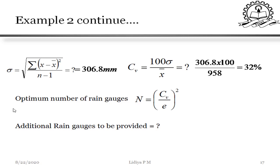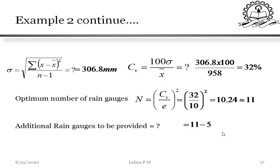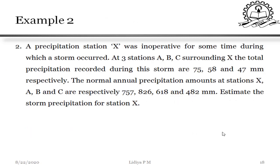For the optimum number of rain gauges, substitute the values into the equation where E is the percentage error = 10 percent. You get 10.24, which rounds up to 11. Since there are already 5 existing rain gauge stations, the additional number of rain gauges required = 11 minus 5 = 6.